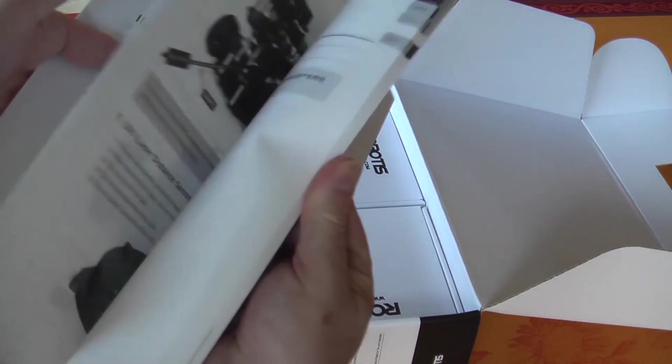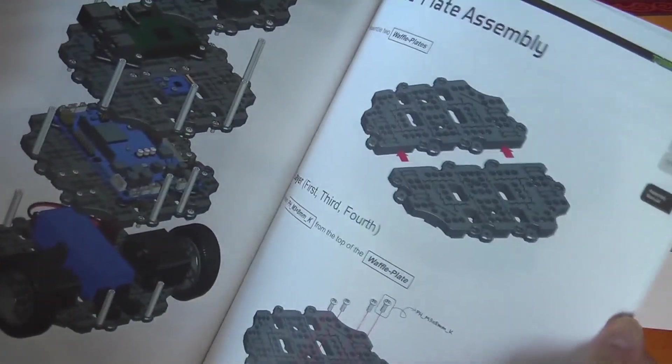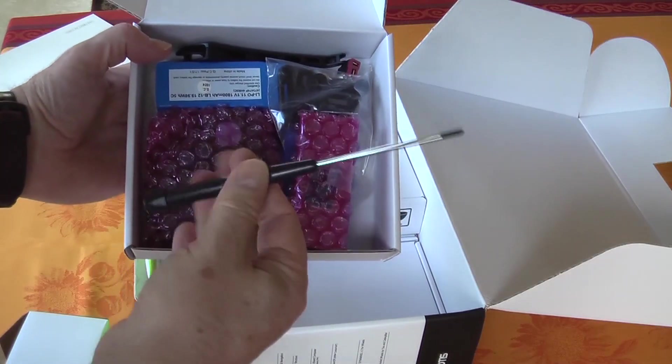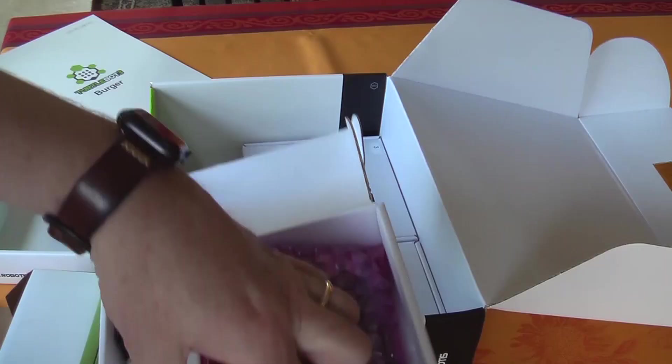The TurtleBot 3 Burger is capable of being operated remotely or navigating autonomously. The kit comes complete with everything you need to build the robot, including tools, a LiPo battery and charger, and the Raspberry Pi computer.